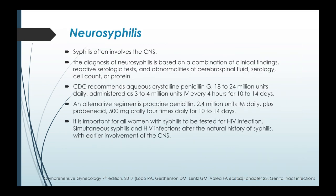Neurosyphilis often involves the central nervous system. Diagnosis is based on a combination of clinical findings, reactive serologic tests, and abnormalities of cerebrospinal fluid serology, cell count, or protein. The CDC recommends aqueous crystalline penicillin G 18 to 24 million units daily, administered as 3 to 4 million units IV every four hours for 10 to 14 days. An alternative regimen is procaine penicillin 2.4 million units IM daily plus probenecid 500 milligrams orally four times daily for 10 to 14 days. It is important for all women with syphilis to be tested for HIV infection, as simultaneous syphilis and HIV infections alter the natural history of syphilis with earlier involvement of the CNS.